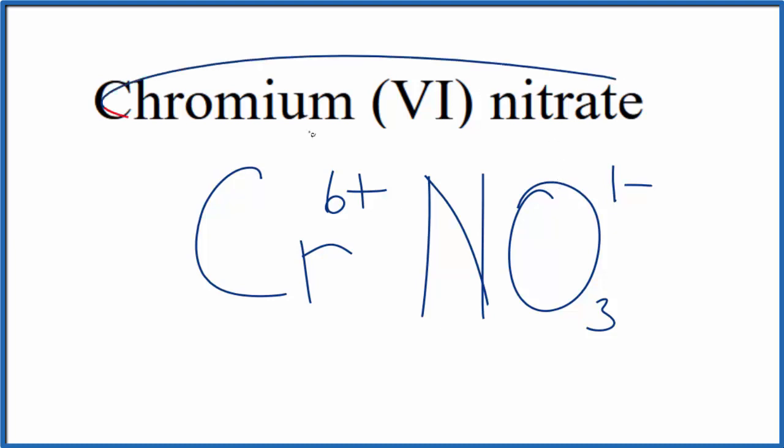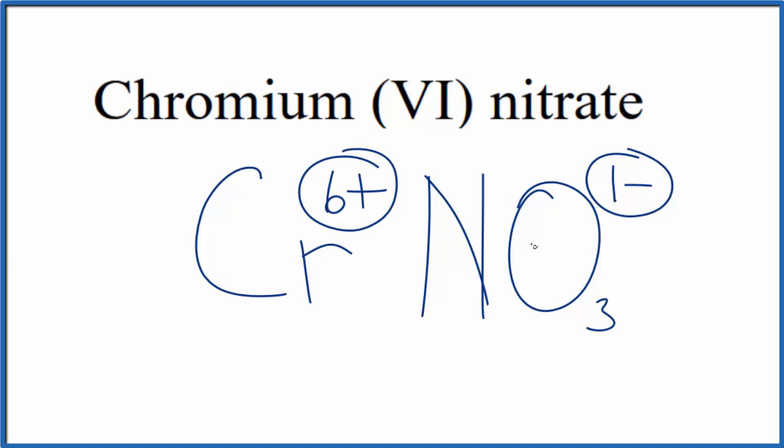So chromium nitrate is neutral. It doesn't say ion after the name. Because of that, these charges are going to need to add up to 0, give us a net charge of 0.